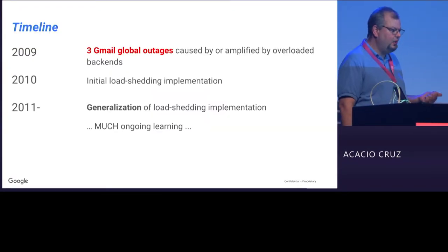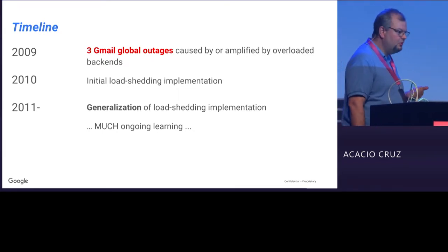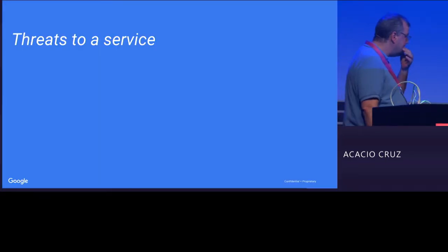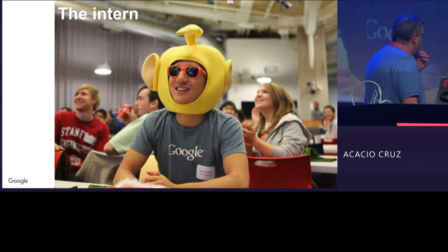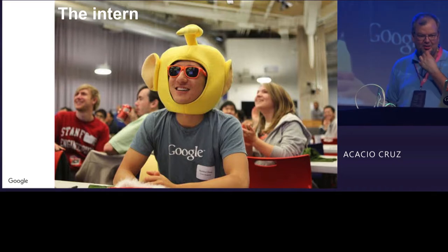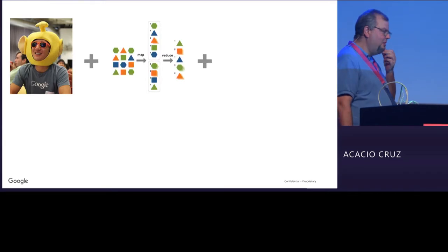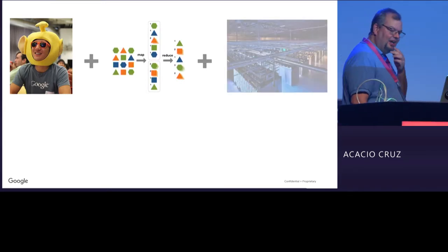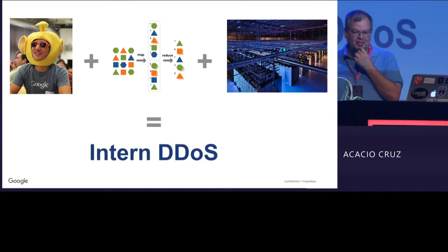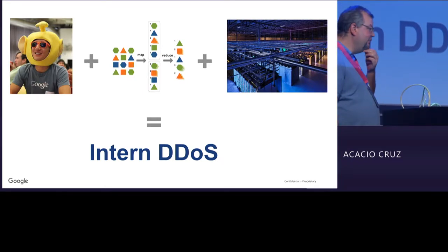The timeline: three Gmail global outages, the first implementation in 2010, and ever since we've been generalizing and learning a lot. So what are the threats to the service? The biggest threat is the intern — specifically, when you give an intern a MapReduce framework and some machines, you basically have an intern distributed denial-of-service attack.